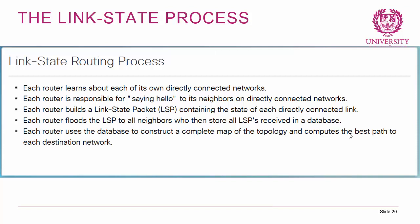Here's an overview of the link state routing process. When the network starts up, each router learns about its own directly connected networks. Then each router sends a hello packet to its neighbors on directly connected networks. Each router then builds a link state packet, which contains the state of each directly connected link. It floods this LSP to all neighbors, who store it in their database. In the next stage, each router adds this new information to their LSP and floods that as well. At the end, each router uses those LSPs to construct a database containing a complete map of the topology, and then individually computes the best path to every destination network.